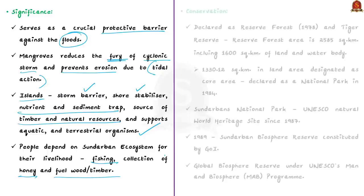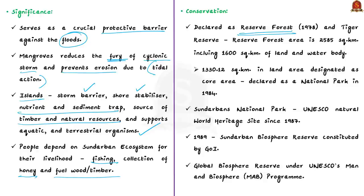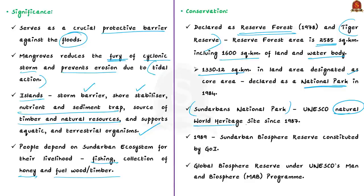Because of its ecological and economic importance, part of Sundarbans was declared a reserve forest in 1978 and subsequently declared a tiger reserve. This total reserve forest area is around 2,500 square kilometers, including around 1,600 square kilometers of land. Within this land area, around 1,300 square kilometers is designated as core area, declared as a national park by the Government of India in 1984. The Sundarbans National Park was designated by UNESCO as a Natural World Heritage Site in 1987, and in 1989 the government constituted the Sundarbans Biosphere Reserve, which is also a global Biosphere Reserve under UNESCO.